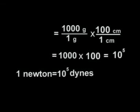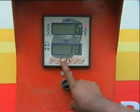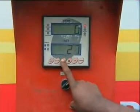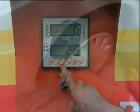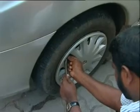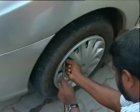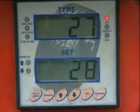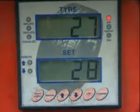Example: 1 Newton = 10⁵ dynes. Third use: to derive the correct relationship between physical quantities when one physical quantity depends on several others, using the dimensional method.